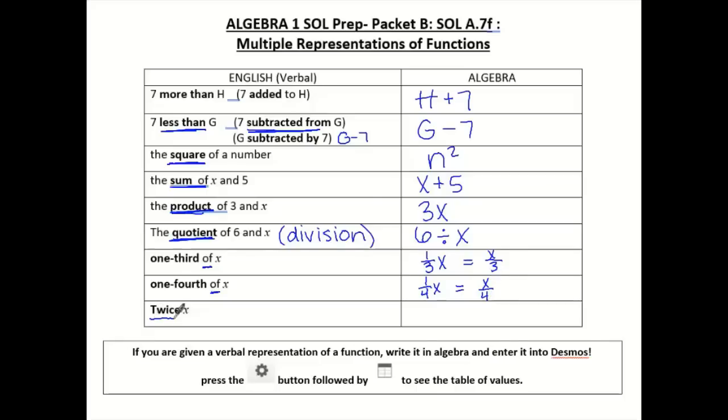Lastly, we have twice X. Twice means we're going to multiply 2 times whatever it is. Twice X, twice Y. We're looking at that 2 times.